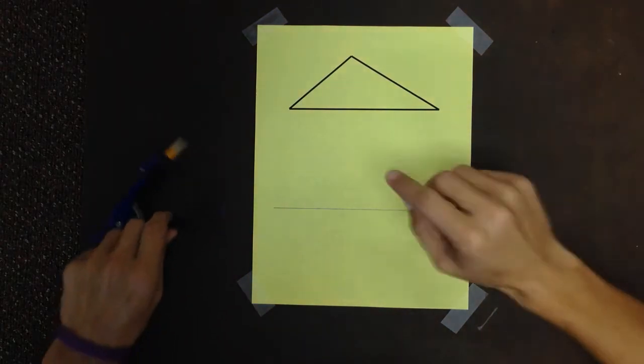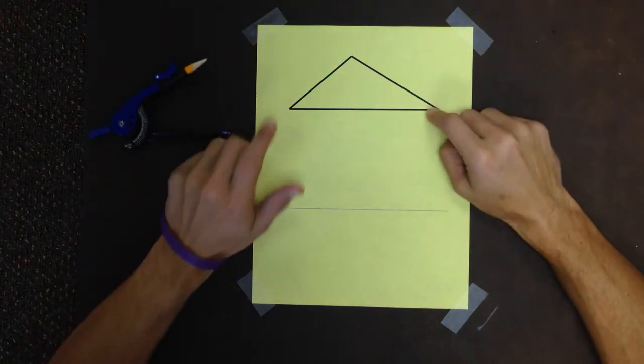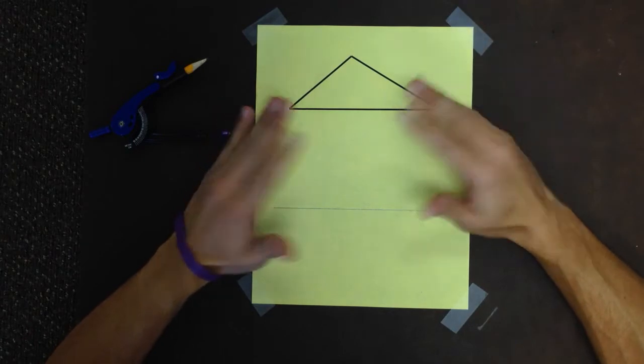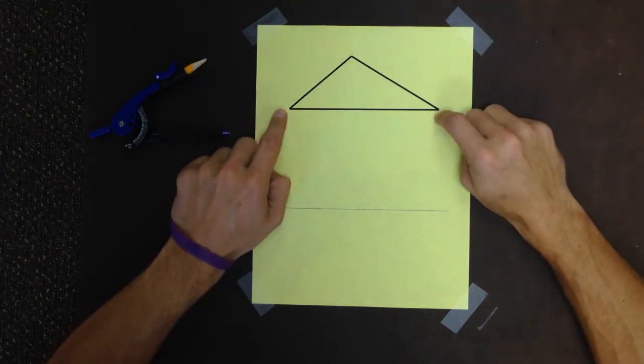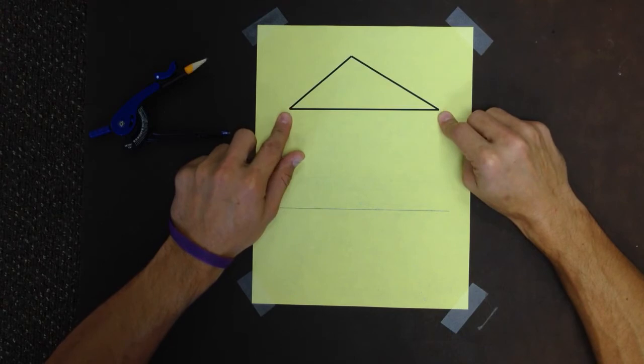Now we need to establish how long that side is. Remember we go side, angle, side. So the first thing I have to do is construct a congruent side. I'm going to construct one that is that big.